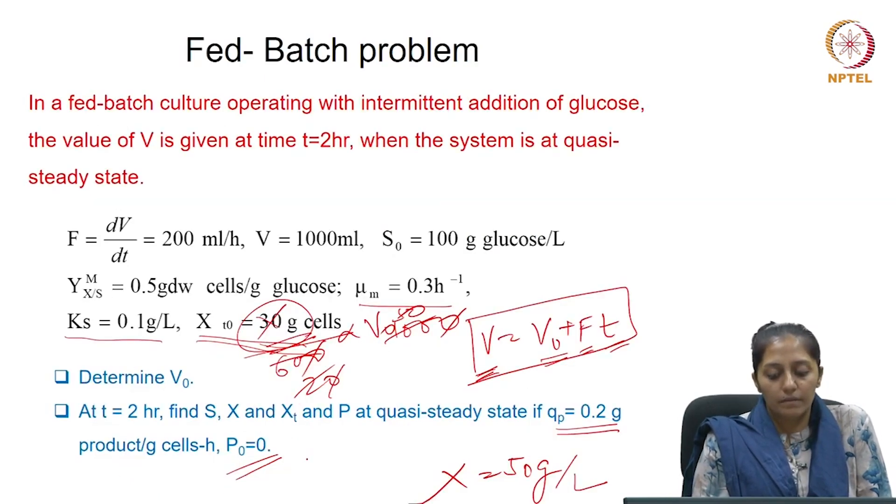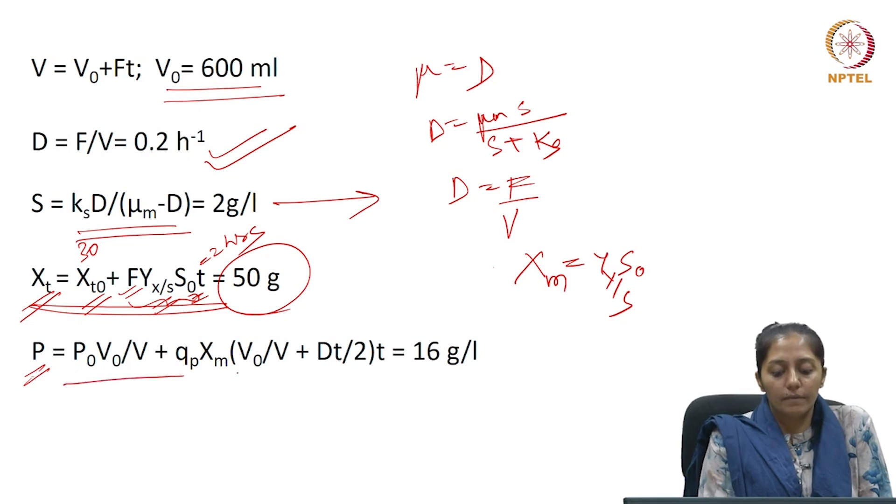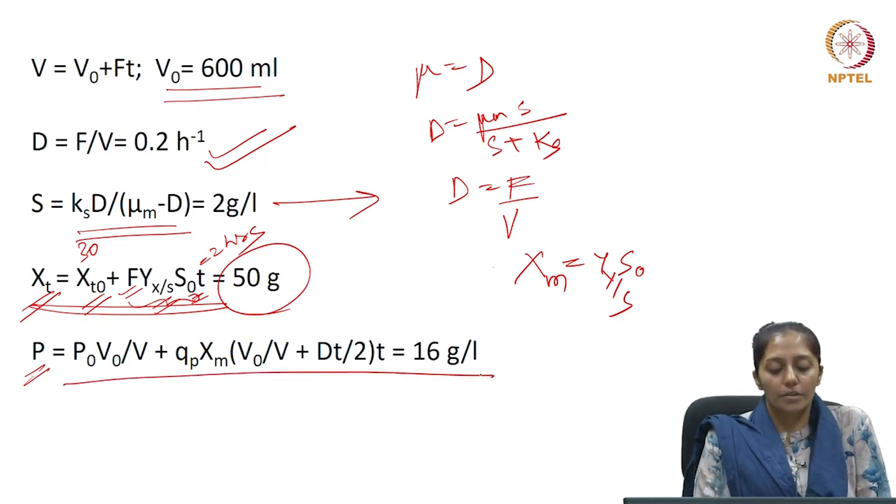So, then we can find the value of product concentration, which comes out to be 16 grams per liter.